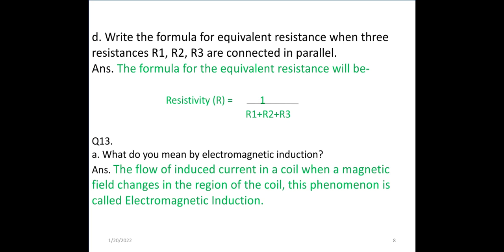Write the formula for equivalent resistance when three resistances R1, R2, R3 are connected in parallel. In series it is directly R1 + R2 + R3. The relation between parallel and series connection is reciprocal, so in parallel it will be 1/R = 1/R1 + 1/R2 + 1/R3.